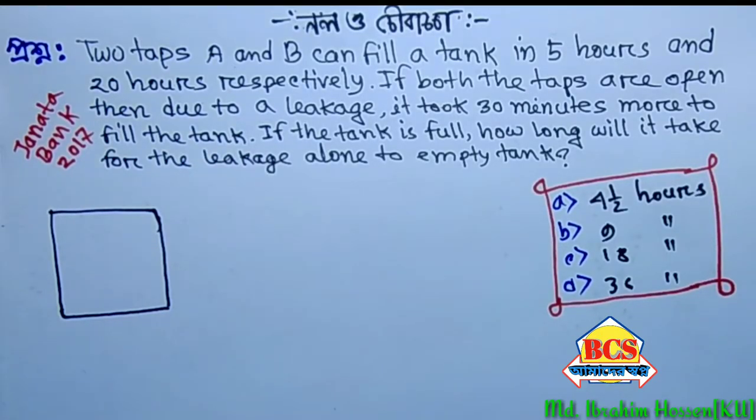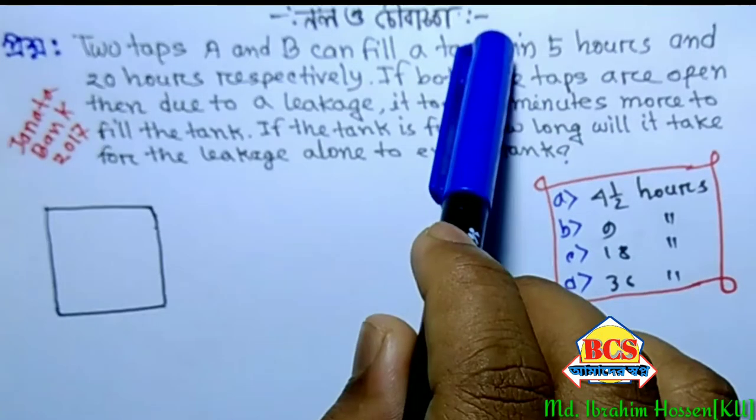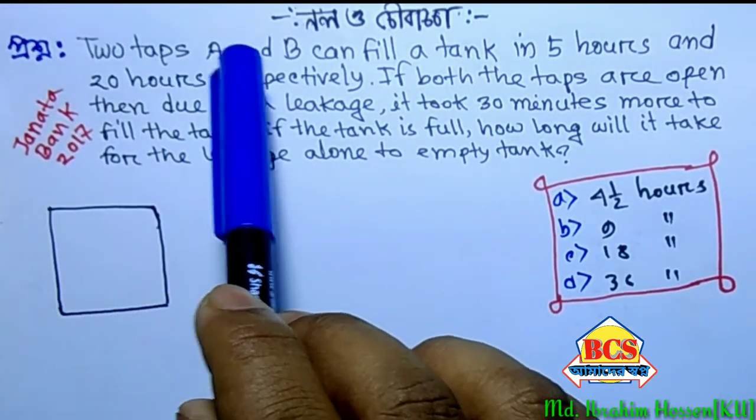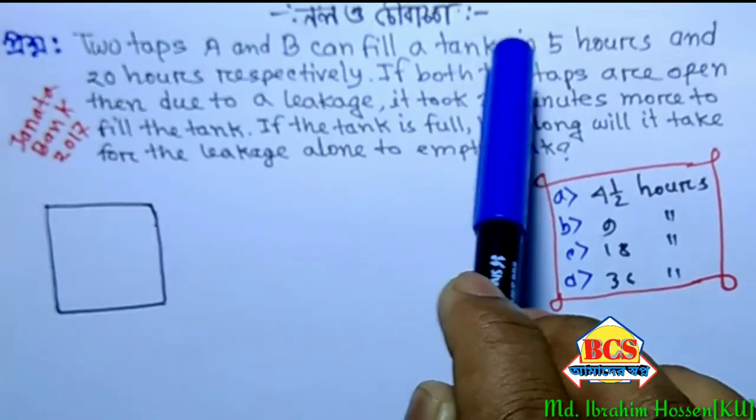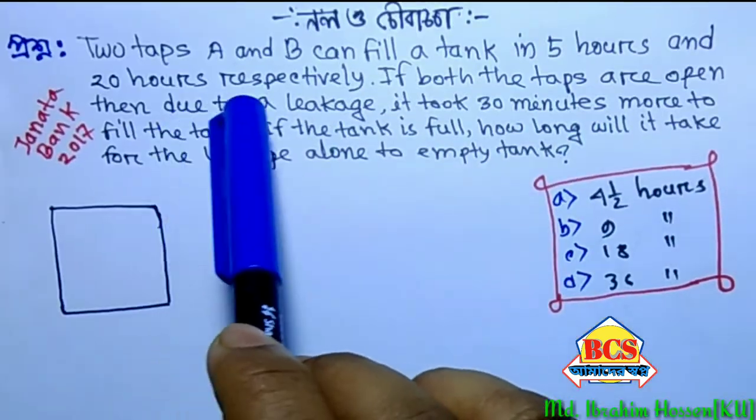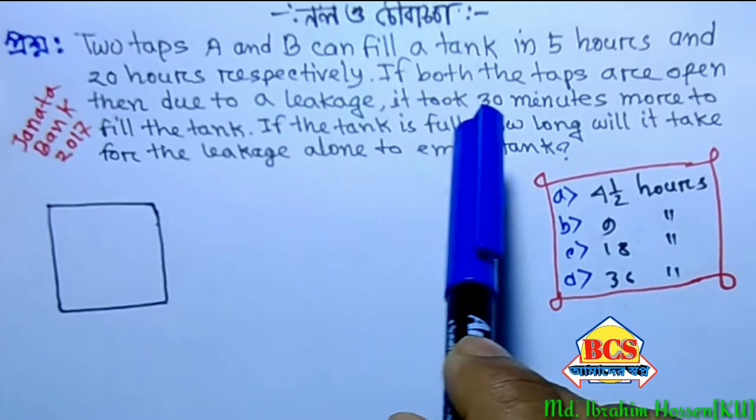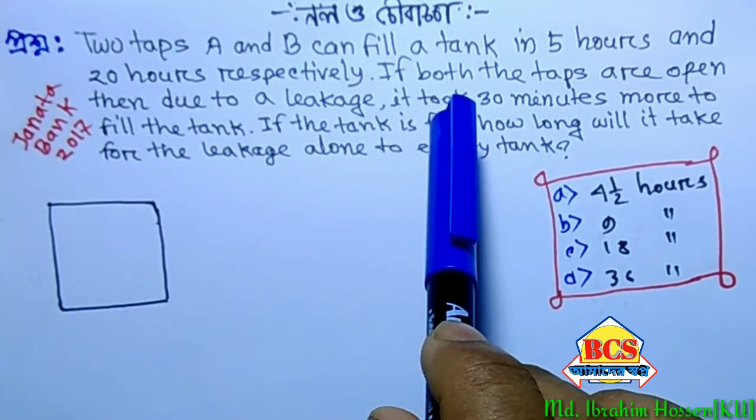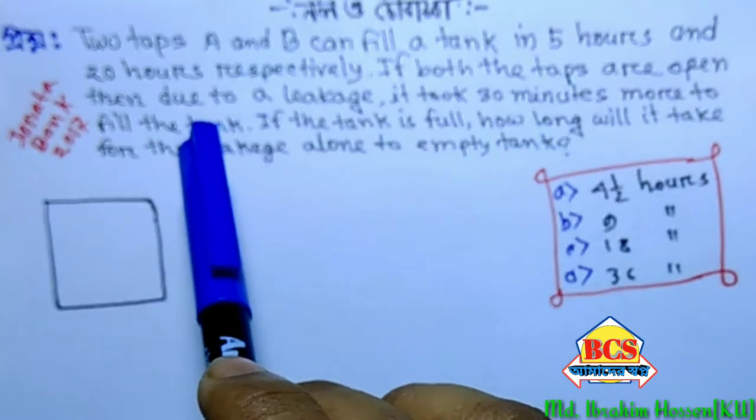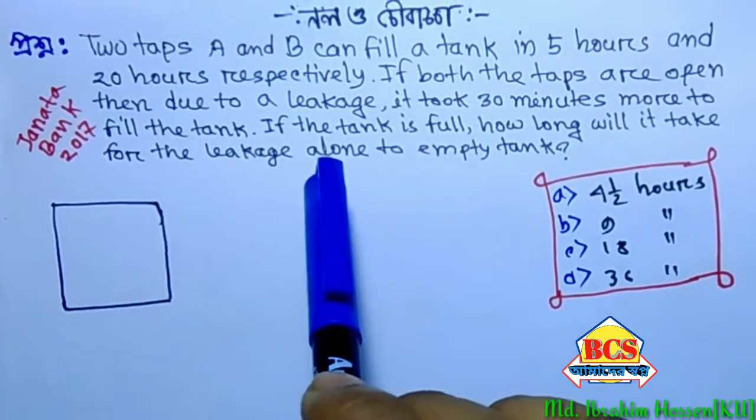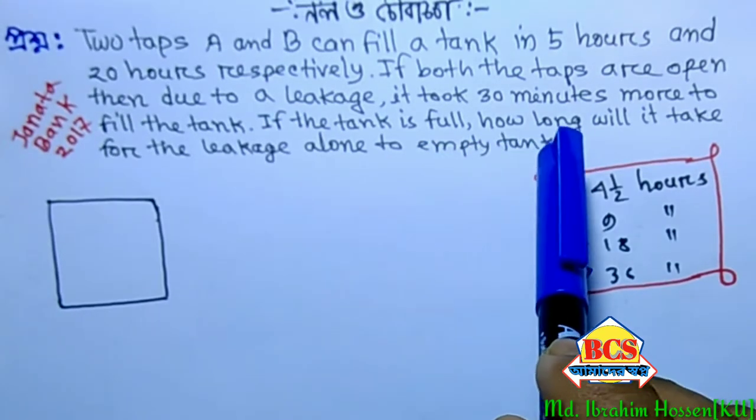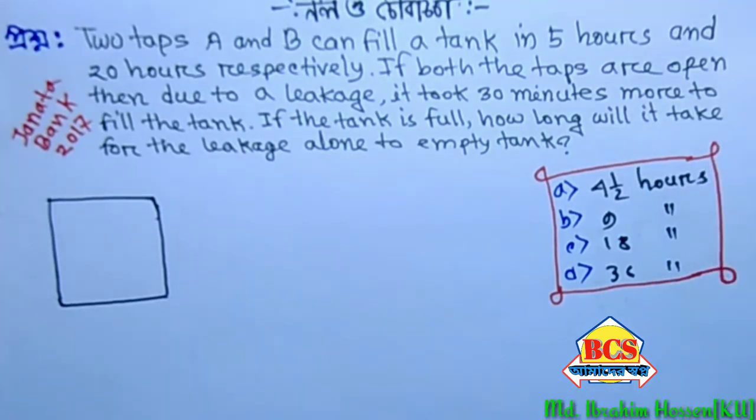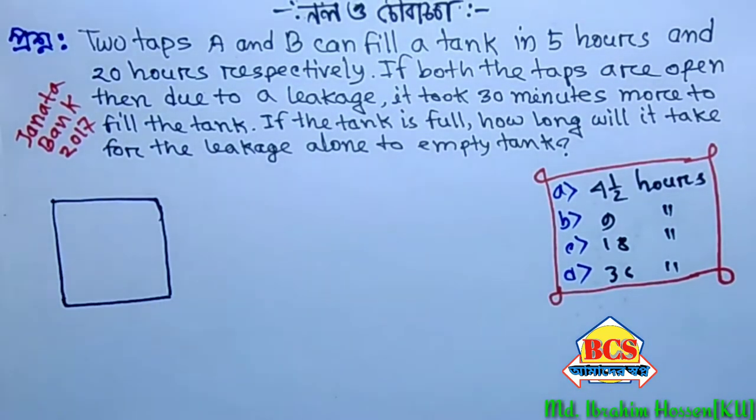Assalamu alaikum, welcome to my channel BCS Our Dream. Two taps A and B can fill a tank in 5 hours and 20 hours respectively. If both the taps are open, then due to a leakage it took 30 minutes more to fill the tank. If the tank is full, how long will it take for the leakage alone to empty the tank?